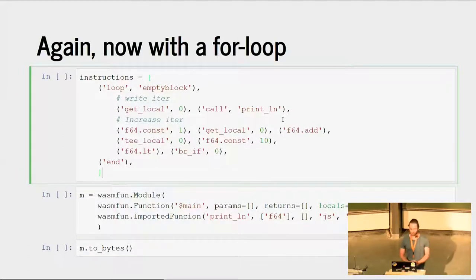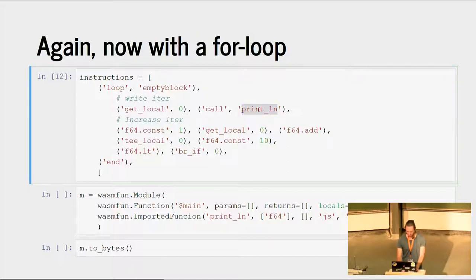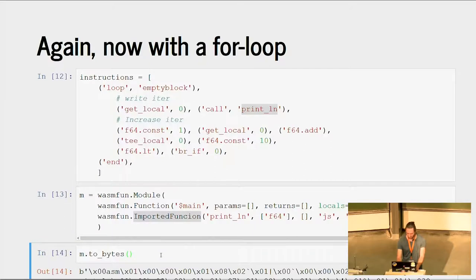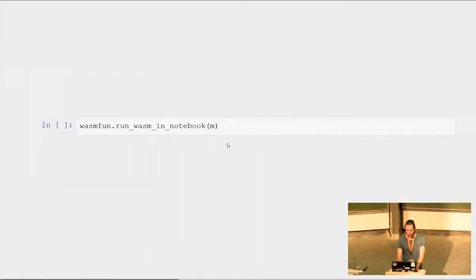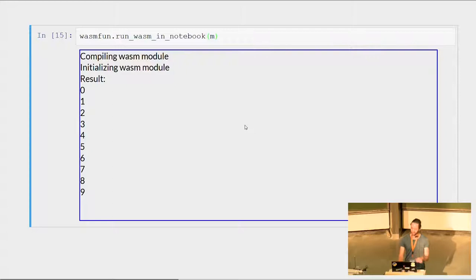Let's do the same thing but make it a little more interesting. We can define instructions that define a for loop in WebAssembly. Of course this looks horrible — you don't want to write code manually like this — but this is a for loop running from 0 to 10, printing the iterable at each iteration. We wrap these instructions into a function and then into a module; in this case we only need one import function. The WASM fun library has a function called run_wasm_in_notebook which basically does what we just did, but easier. And we can see the for loop running.